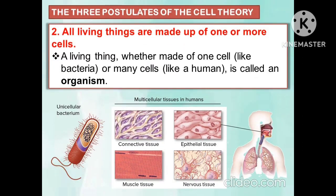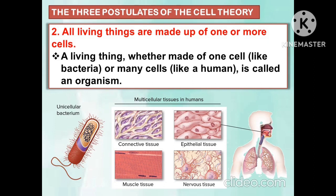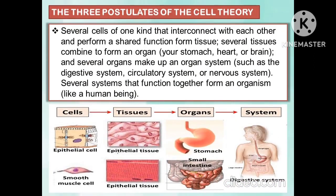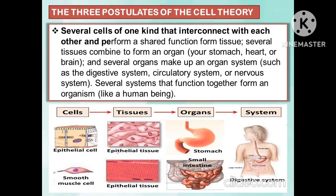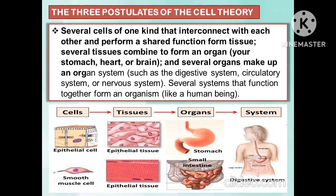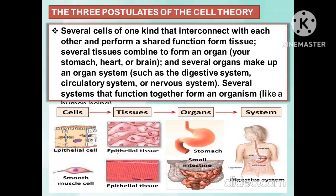Another postulate of the cell theory is that all living things are made up of one or more cells. All living things, whether made of one cell like bacteria or many cells like a human, is called an organism. Several cells of one kind that interconnect and perform a shared function form tissue. Several tissues combine to form an organ, such as your stomach, heart, or brain. Several organs make up an organ system, such as the digestive system, circulatory system, or nervous system.